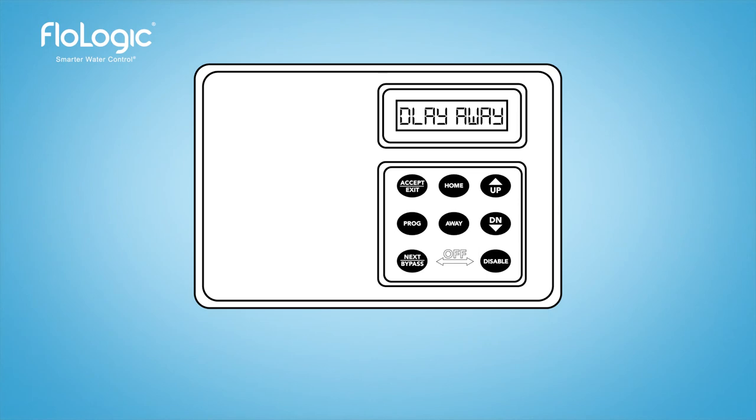The delay away mode temporarily holds a system in the home mode once the away mode is prompted. This is used by those who wish to enter the away mode when they leave a property while they have a dishwasher that's running. A delay away of 60 minutes will hold a system in the home mode for an hour before automatically going to away.